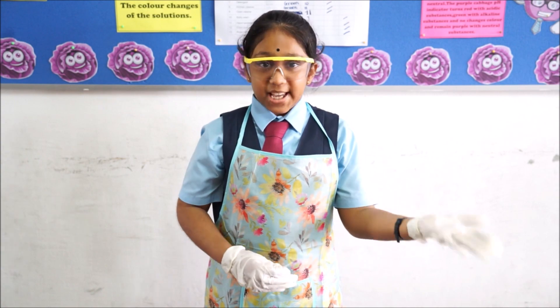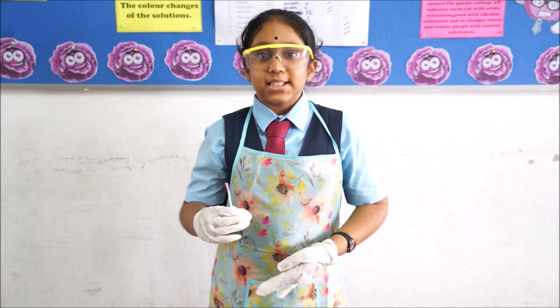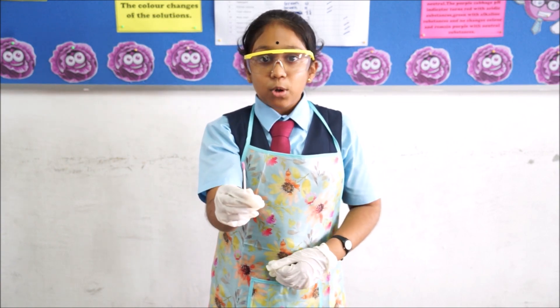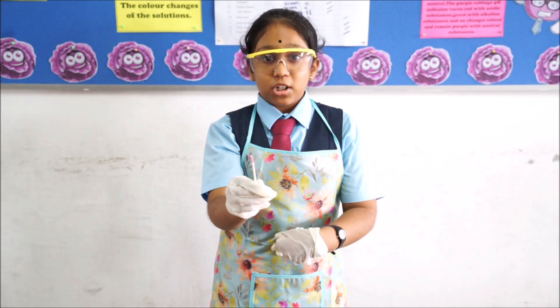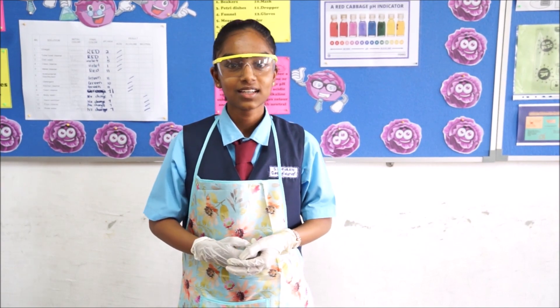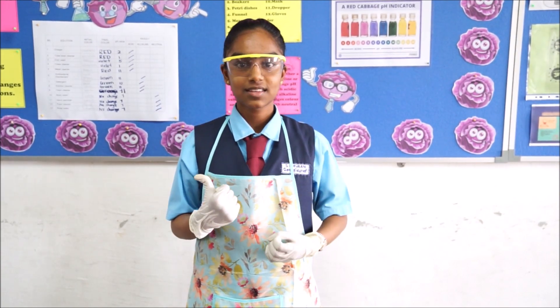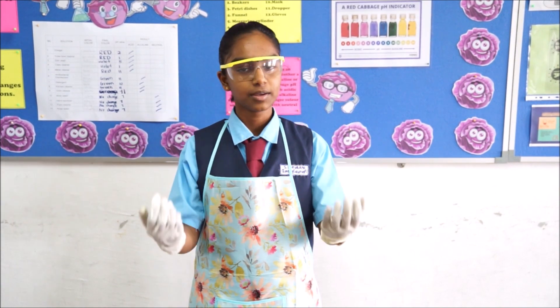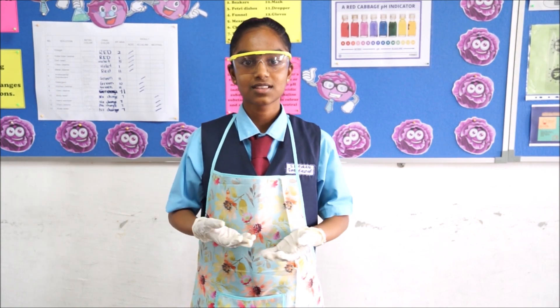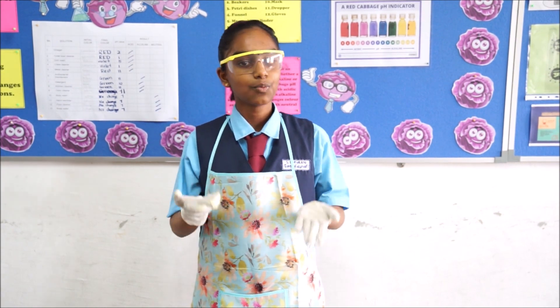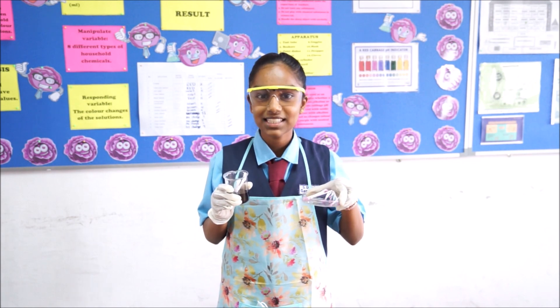The purple cabbage indicator is a very good pH indicator, but it loses its ability to indicate pH over a couple of weeks or months depending on how the solution is stored. So we made our own pH cotton swabber to test household chemicals. We found out this is the best way to store the purple cabbage indicator over longer periods. Purple Cabbage pH indicator is used to determine whether substances are acidic, alkaline, or neutral. It turns red with acidic substances, green with alkaline substances, and remains purple with neutral substances. The pH value of acidic substances is less than 7, alkaline substances is more than 7, and neutral substances is 7. Commercial pH paper can be used but it is very expensive and hard to get. That is why we came up with this innovation using cotton buds and purple cabbage, which is very cheap and easy to get. Thank you!